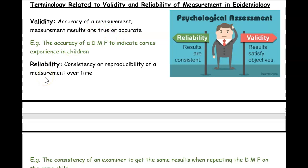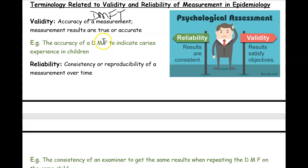To recap: DMFT measures how much caries someone has. D stands for decayed teeth, M for missing teeth due to caries (not wisdom tooth removal), and F for filled teeth with a restoration such as amalgam or composite due to caries. For example, if D=2, M=1, F=5, the DMFT score is 8 (2+1+5=8).